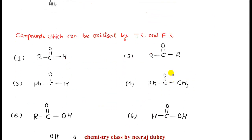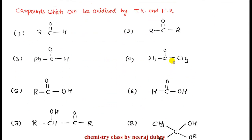Now let's look at some examples to see which compounds can be oxidized by Tollens' and Fehling's reagents. First: an aliphatic aldehyde — this will be oxidized by Tollens'. Next: ketones — ketones do not have an oxidizable hydrogen, so they cannot be oxidized. Next: aromatic aldehyde — Tollens' will oxidize it, but Fehling's will not react.